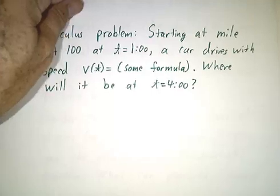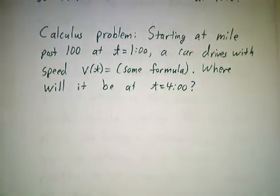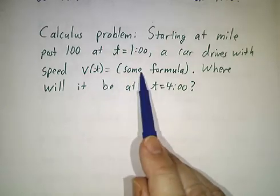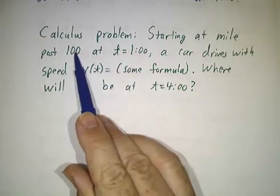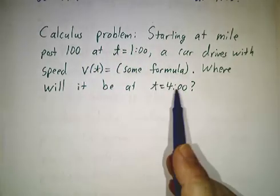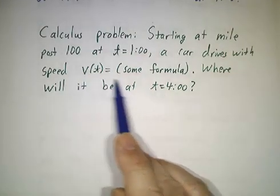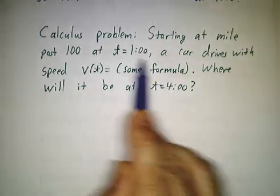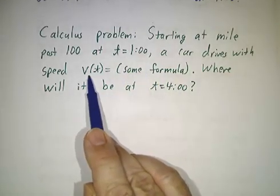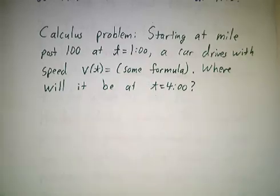In calculus, you say, if somebody gives you your velocity as a function of time, and you're at mile post 100 at 1 o'clock, where are you going to be at 4 o'clock? You have to somehow use information about the rate at which you're changing, that's your velocity, and use that to figure out your position.